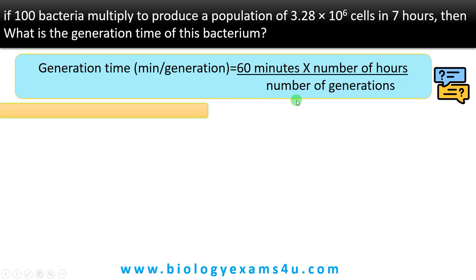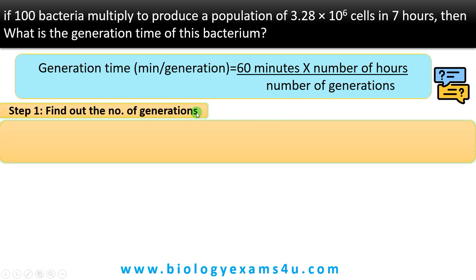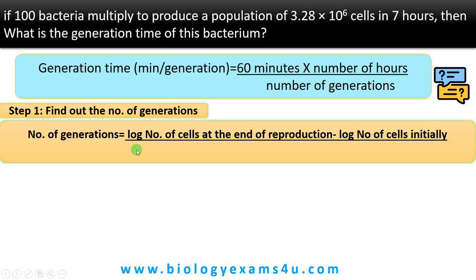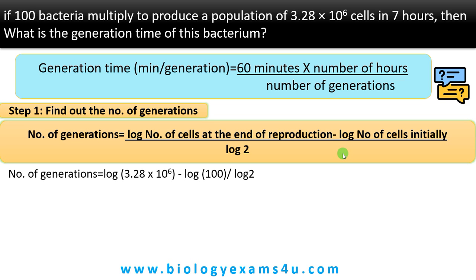Step one is we need to find out the number of generations. To find the number of generations, there is another equation: number of generations = (log of final number of cells − log of initial number of cells) divided by log 2.